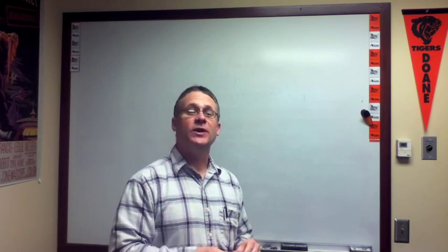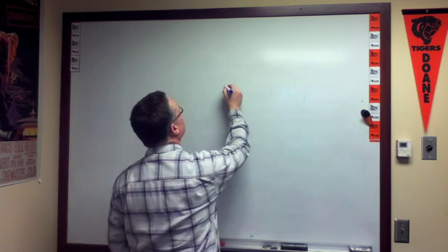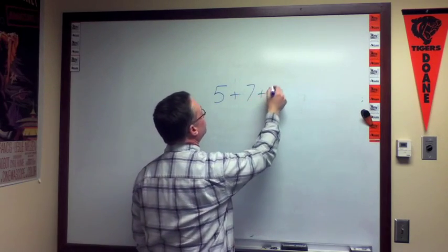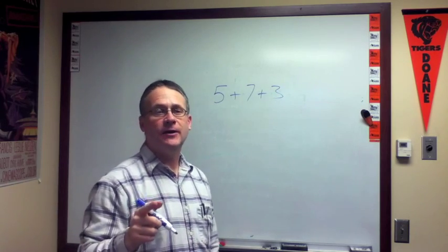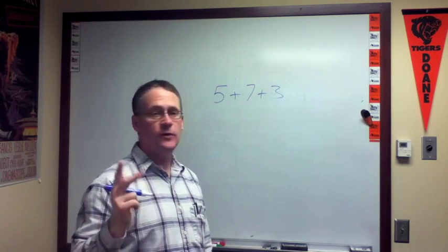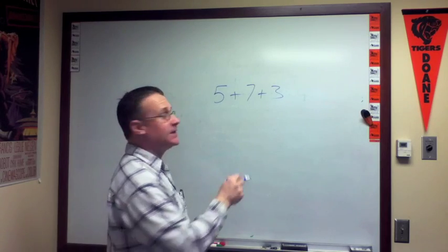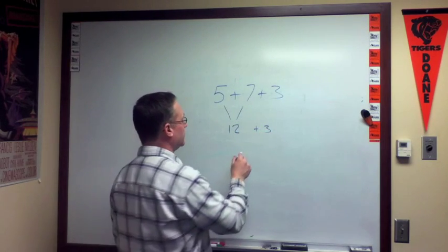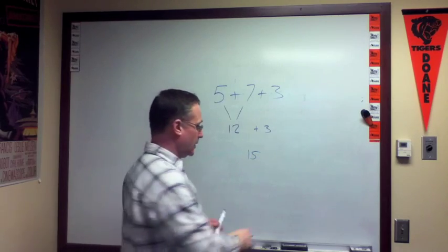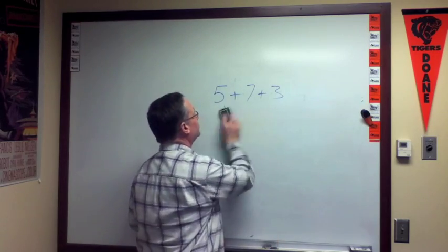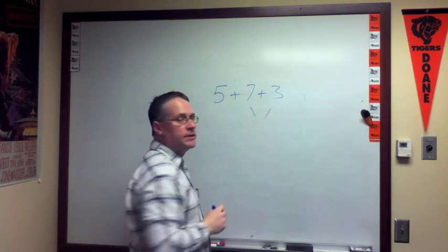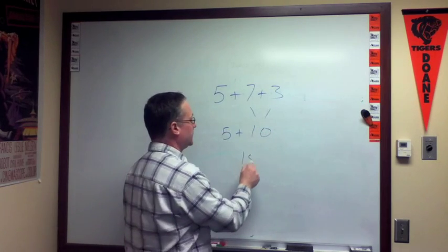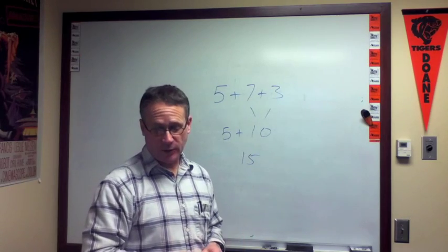So let me give you a couple examples here. First of all, one where it doesn't matter. If I do 5 plus 7 plus 3, it doesn't really matter the order that I do the additions in, even though there's two of them. For example, if I do 5 plus 7 first, that's 12 plus 3, and then the result obviously is 15. But if I do it the other direction, 7 plus 3 first, that's 10, 5 plus 10 is 15. So with addition, it doesn't really matter.